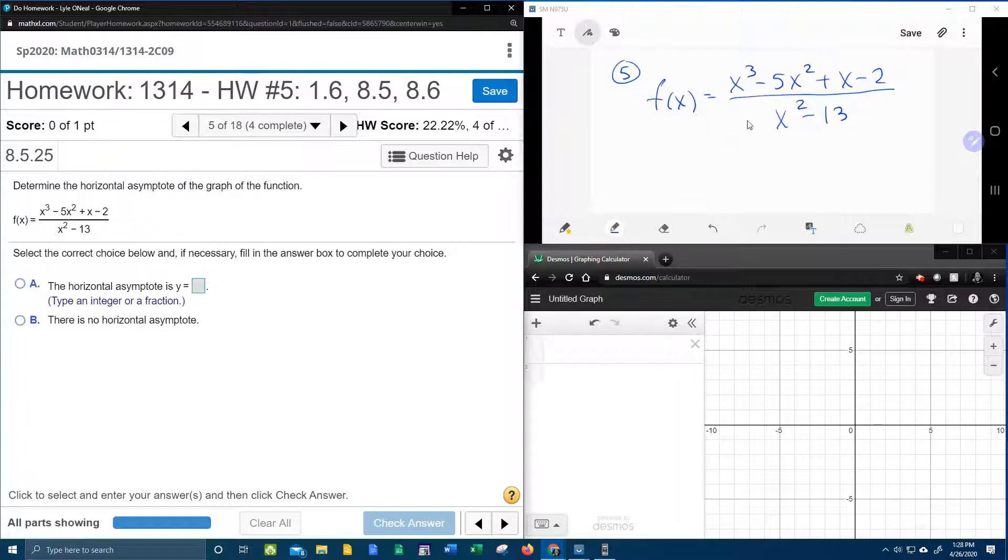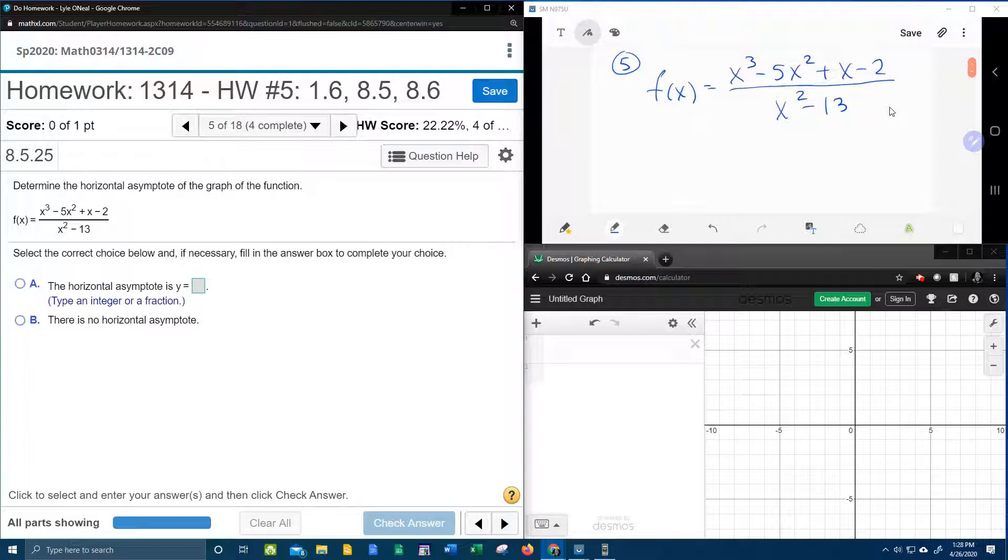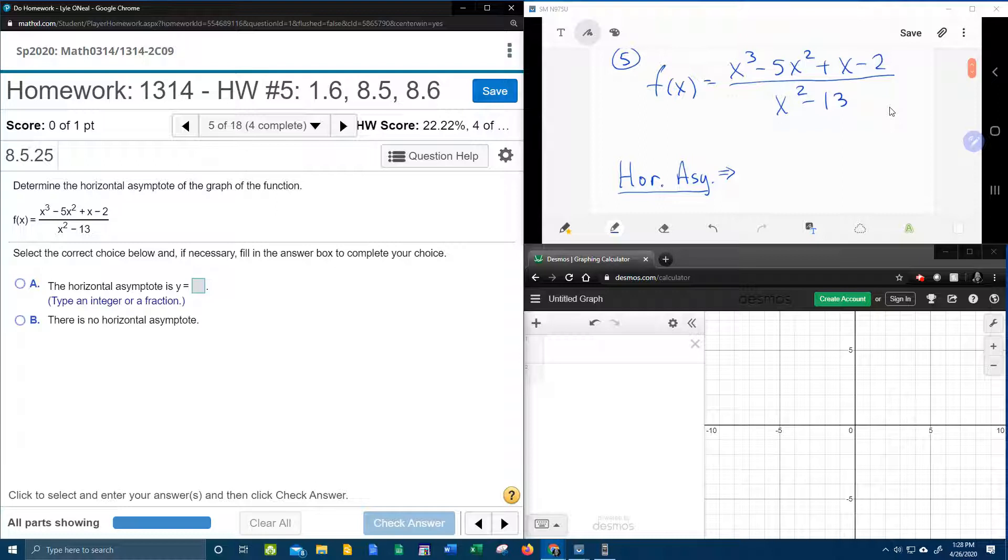And since this is a rational function, and they asked me to find the horizontal asymptote, we're going to have to compare the degree of the top to the degree of the bottom. That is the way you determine a horizontal asymptote.